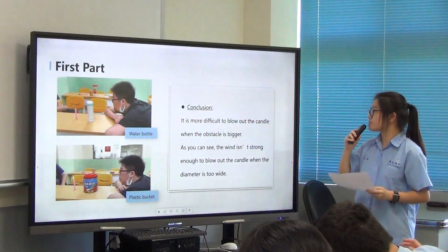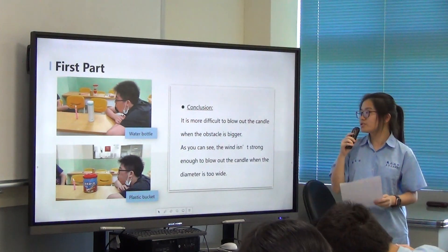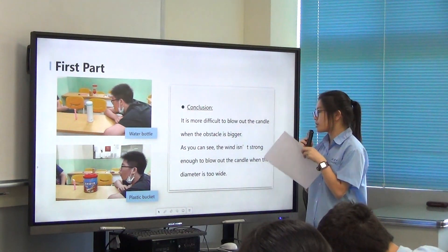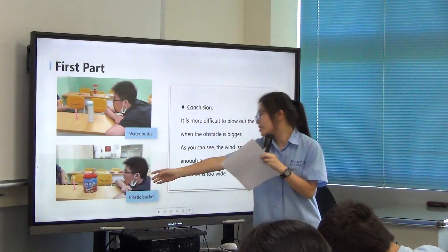And we found that it is more difficult to blow out a candle when the obstacle is bigger. As you can see, the wind isn't strong enough to blow out a candle when the diameter is too wide.